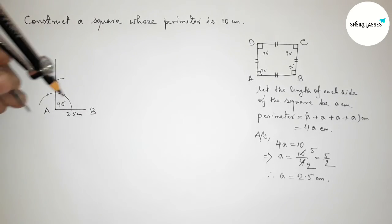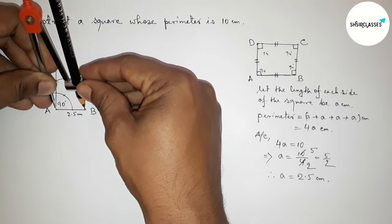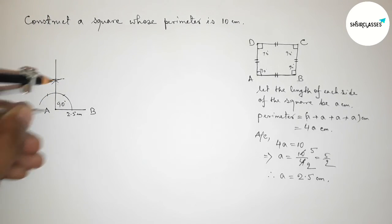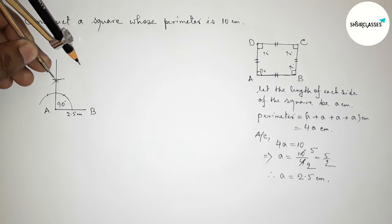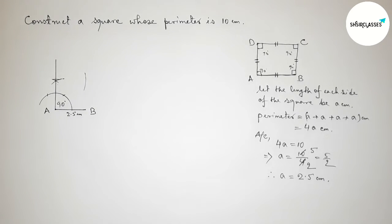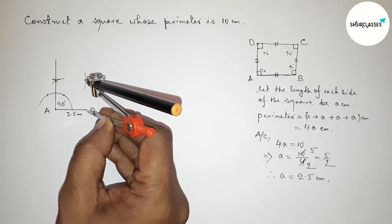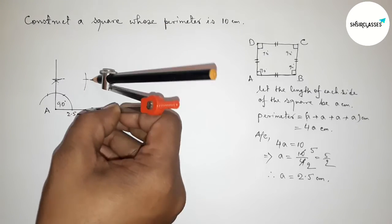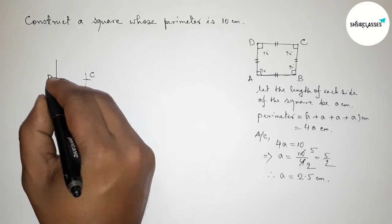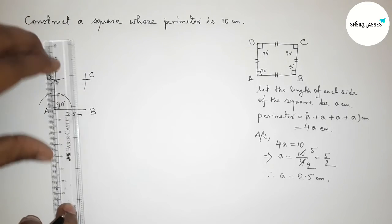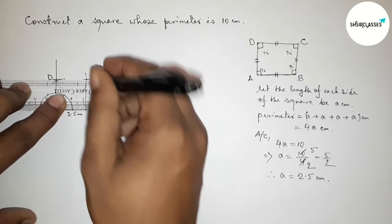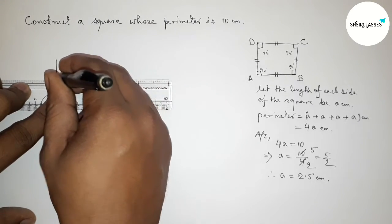Taking the length AB equals 2.5 centimeters and cutting here with the same length. Putting the compass here, drawing an arc with the same length, then putting the compass on point B and cutting here. Taking point C and point D. Now joining B to C, then joining C to D.